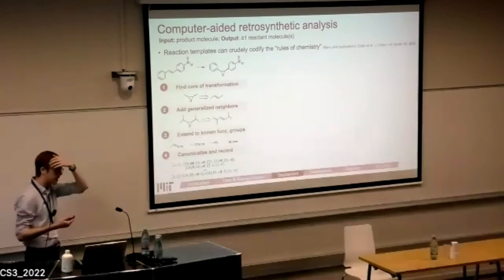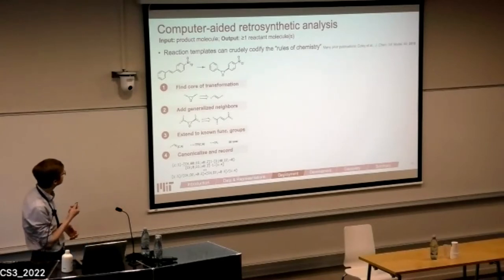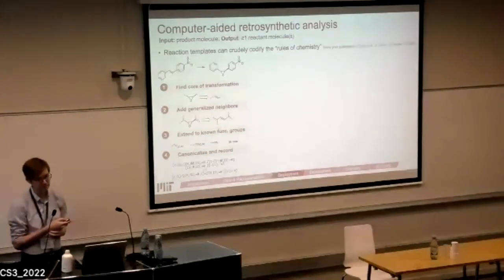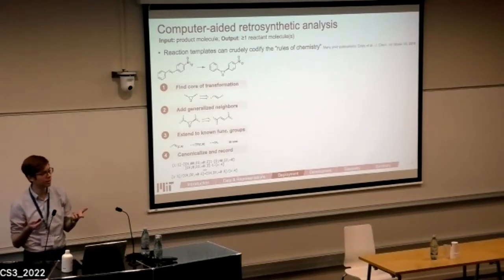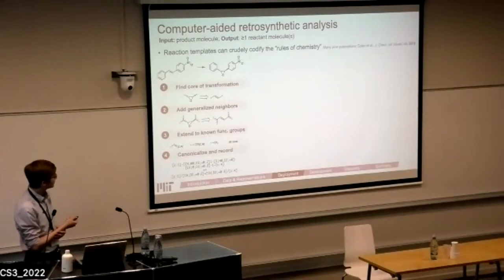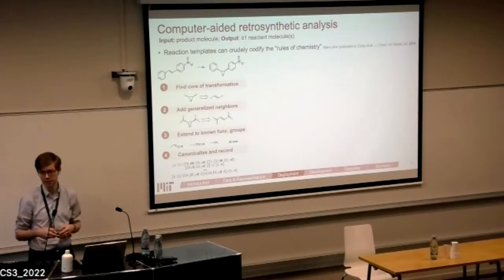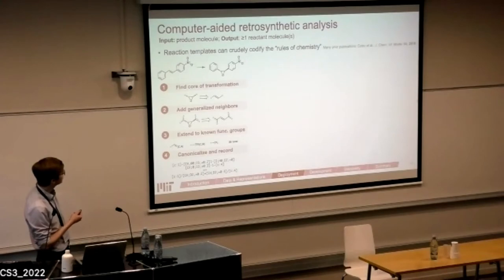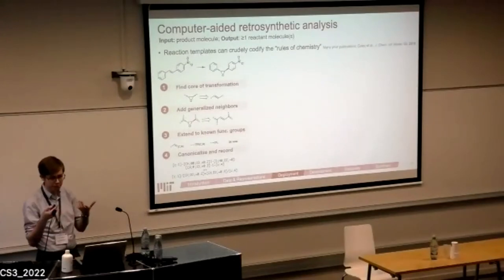The most popular task in reaction deployment is retrosynthetic planning — going from a product molecule as input and getting one or more reactant molecules as output. Most approaches use reaction templates: subgraph patterns codified with SMARTS strings, applied to molecules using packages like RDKit. We get these templates either by surveying chemists or by extracting them from published reactions using simple heuristics. Here we're looking at the epoxidation: atoms that changed in their local environment were just around the alkene, which turned into the epoxide.